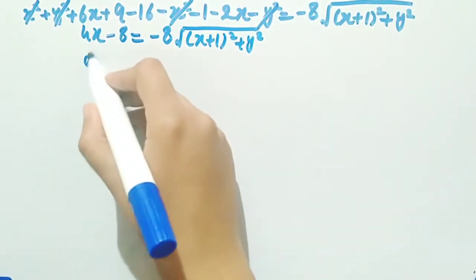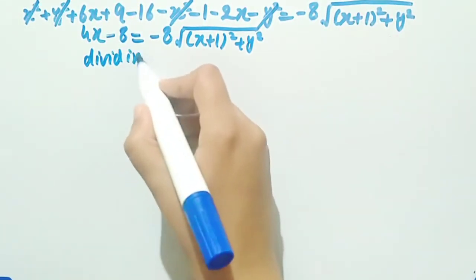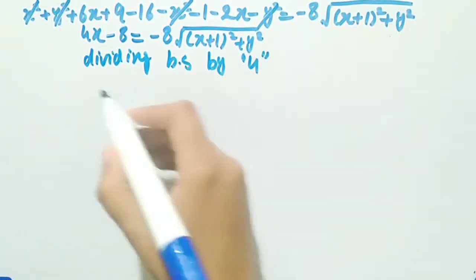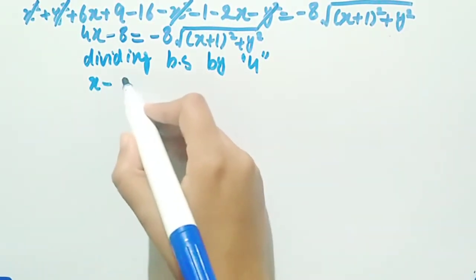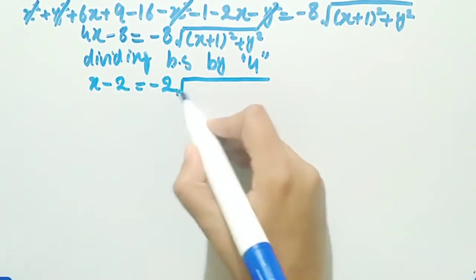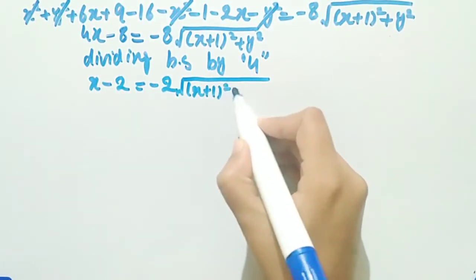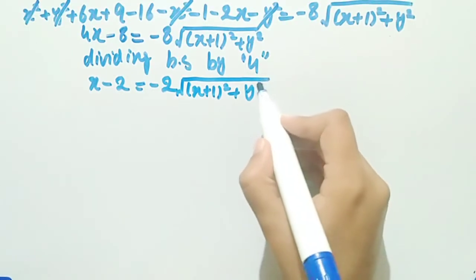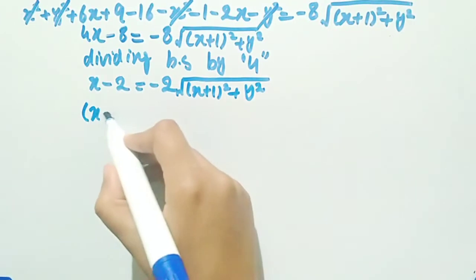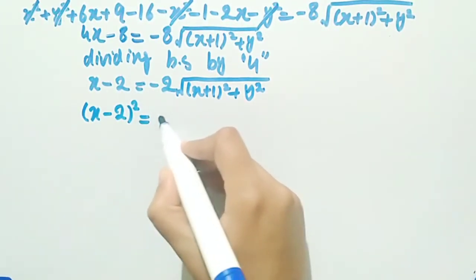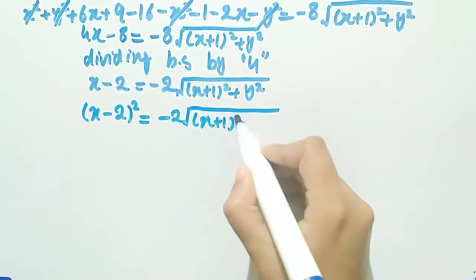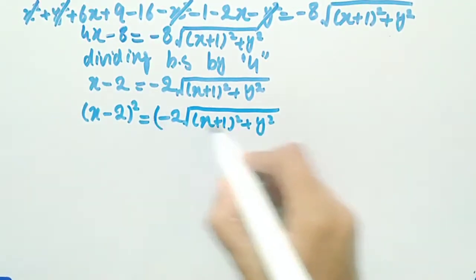Dividing both sides by 4, we get x minus 2 equal to minus 2 times square root of (x plus 1) square plus y square. Now taking square on both sides, we get (x minus 2) whole square equal to minus 2 times square root of (x plus 1) square plus y square, whole square.